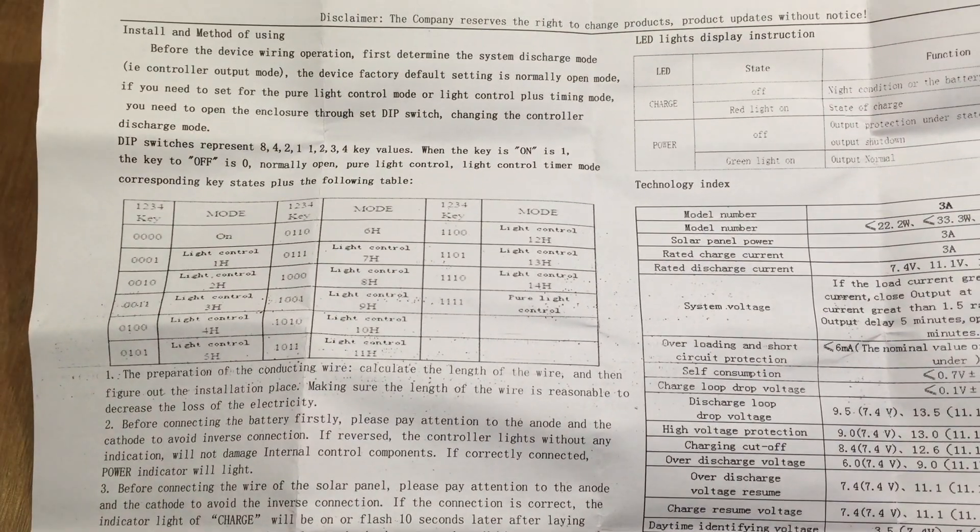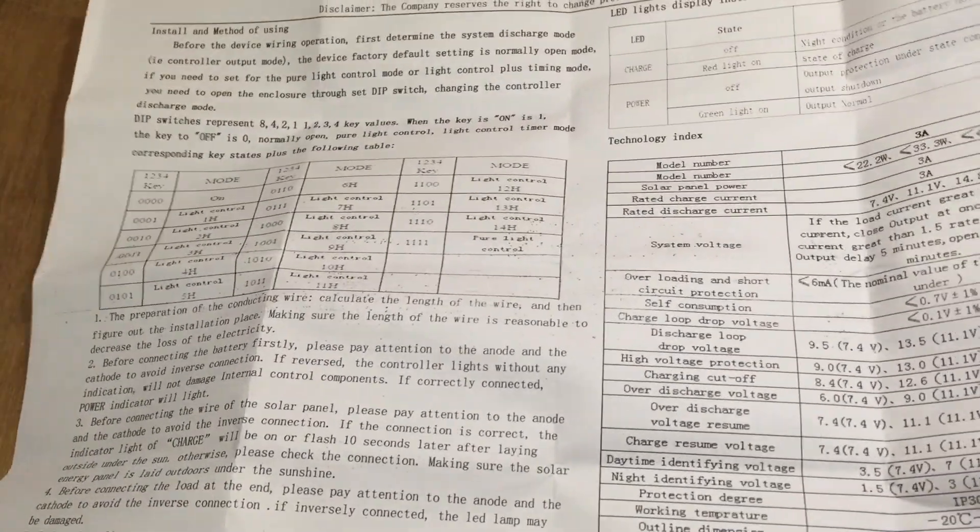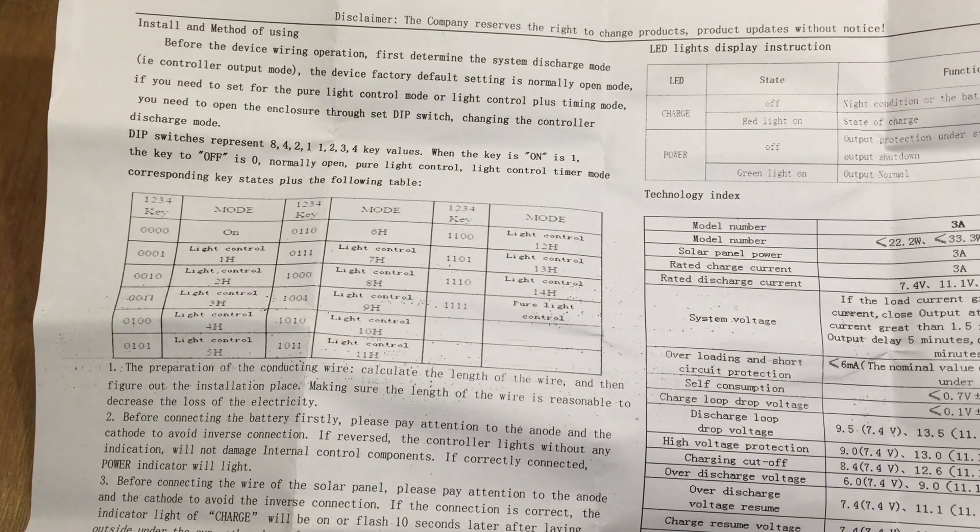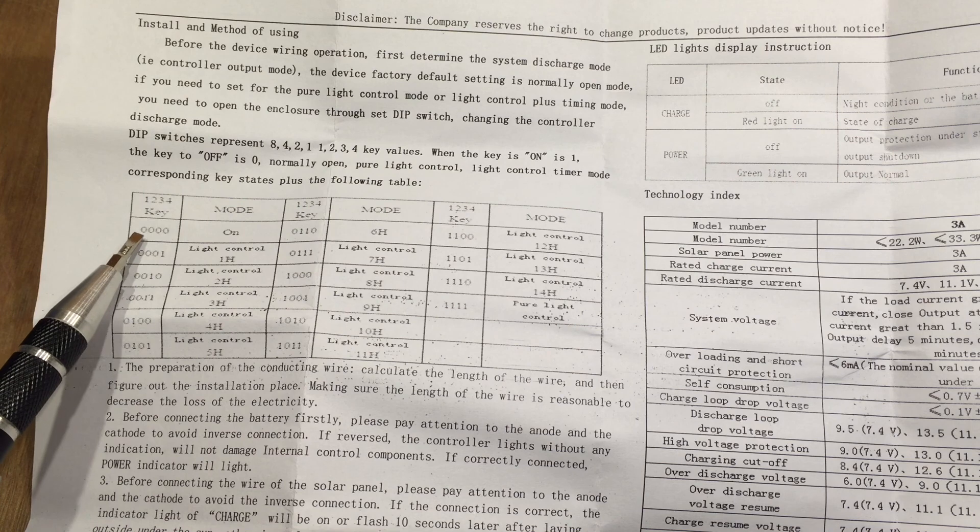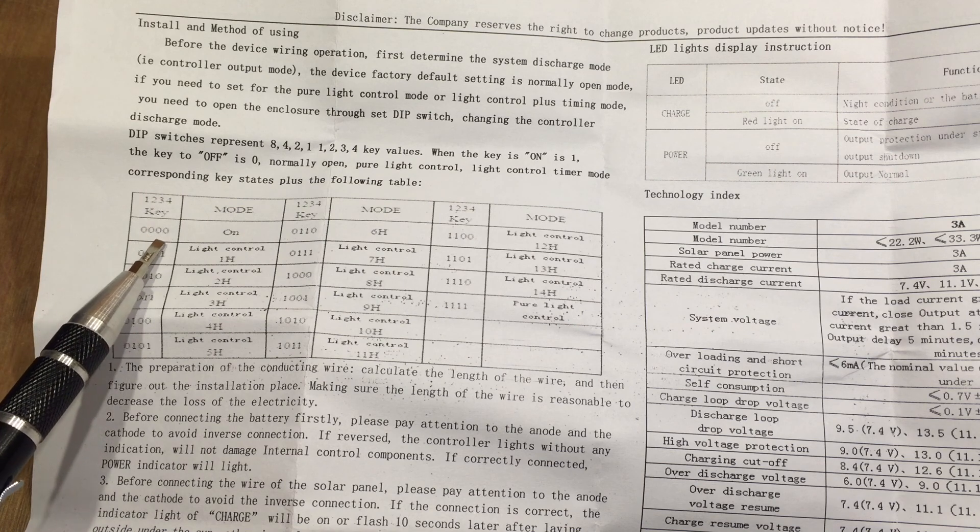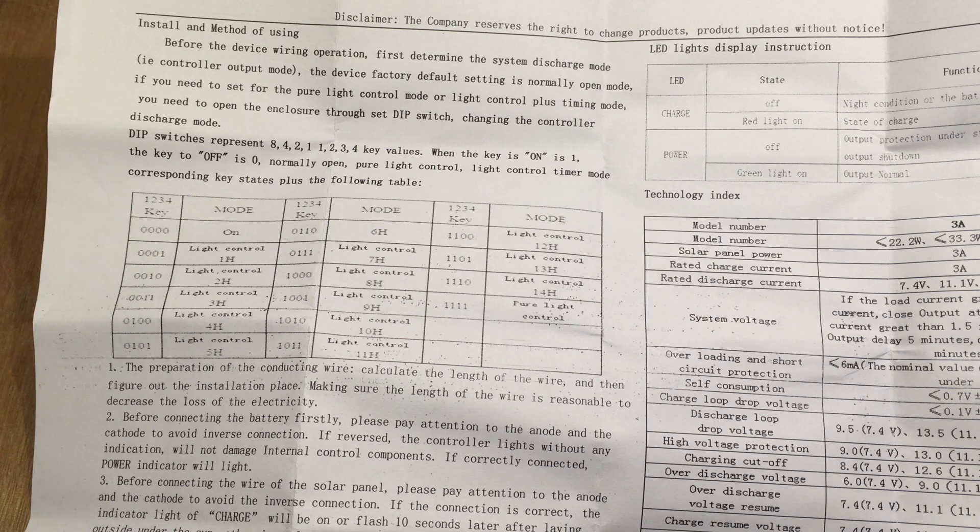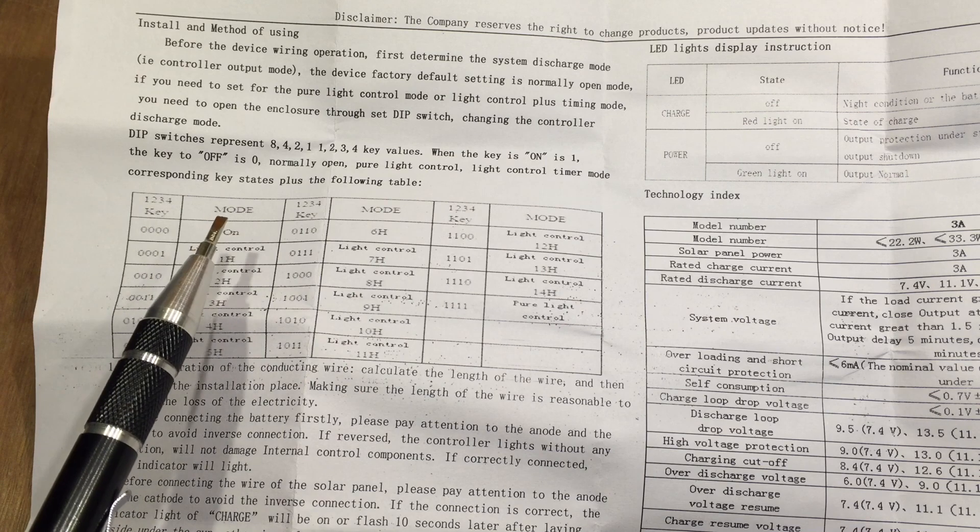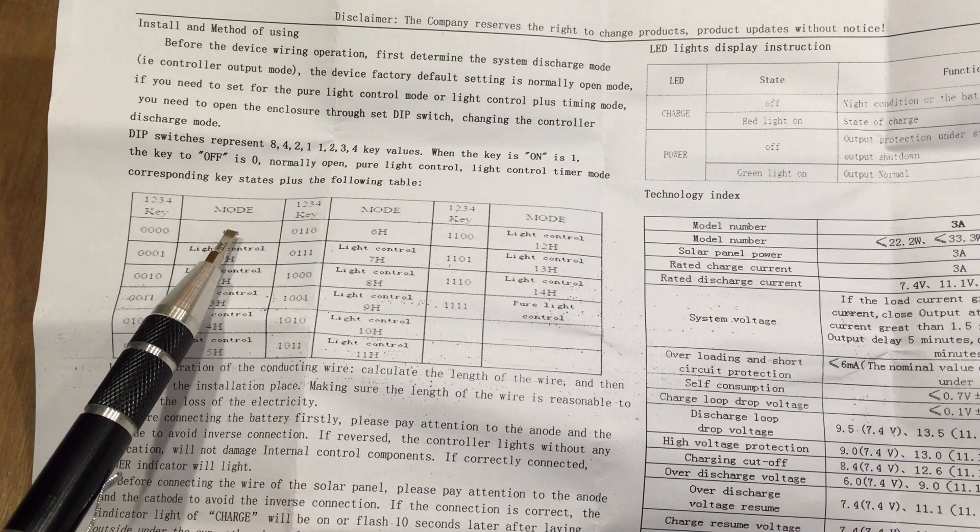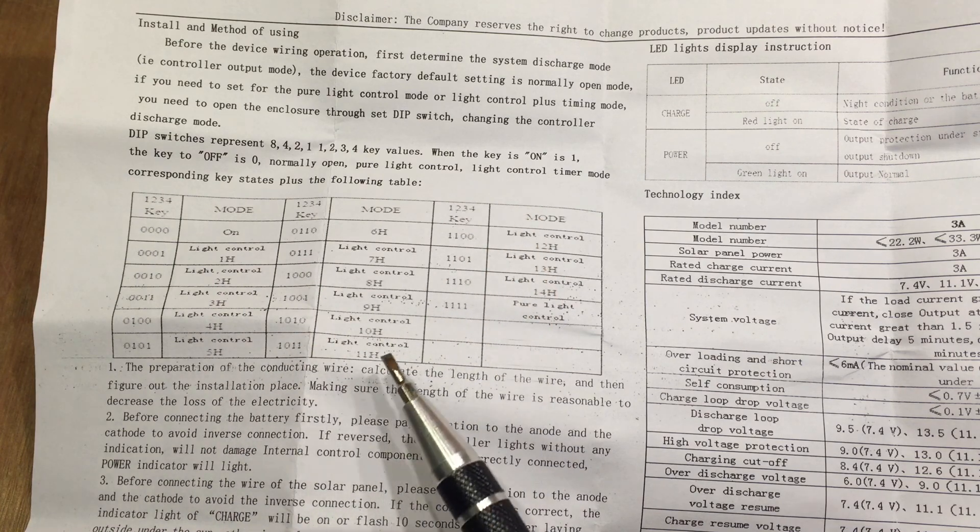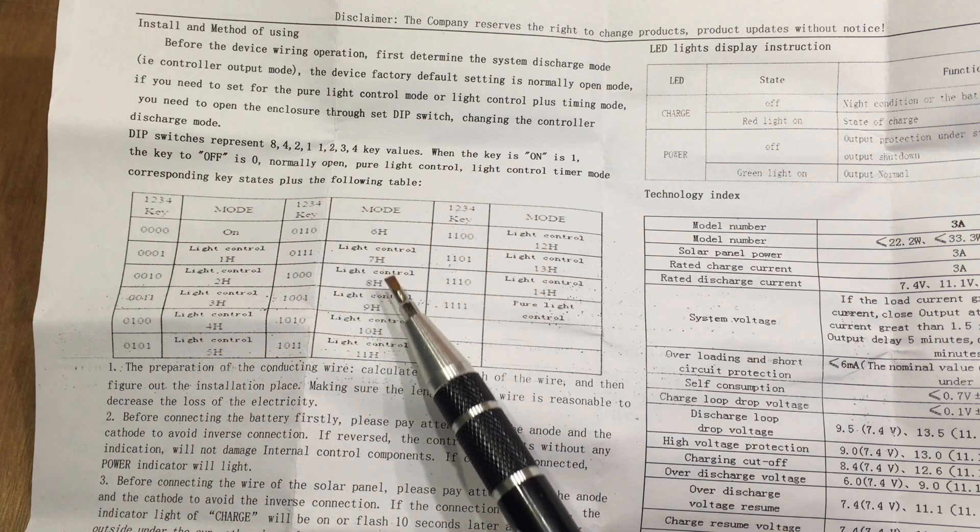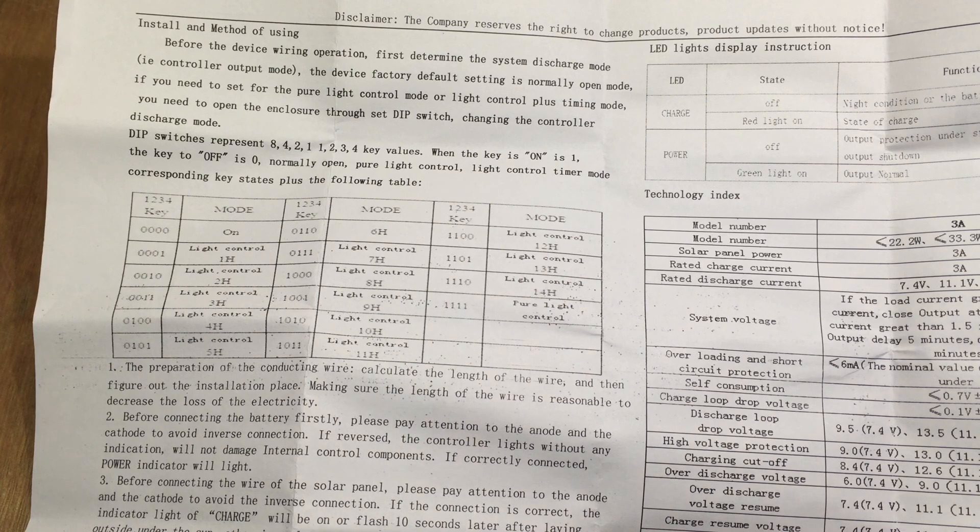It's this table here on the left-hand side which talks about these dip switches. If they're all in the zero mode, which is standard, then the output is on. And if we change the dip switches, it's all about the amount of hours that the output remains on after the solar has stopped producing power, so after the sun has gone in.